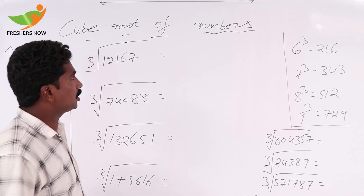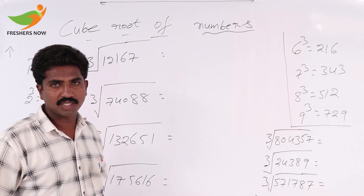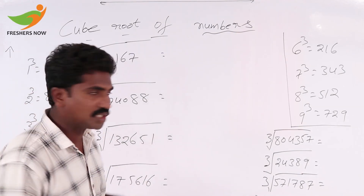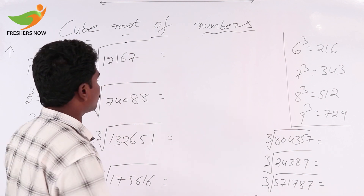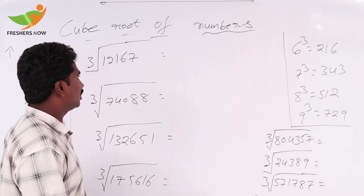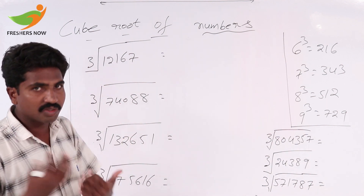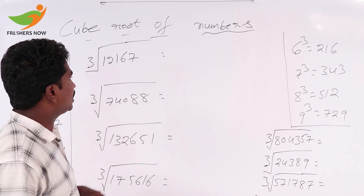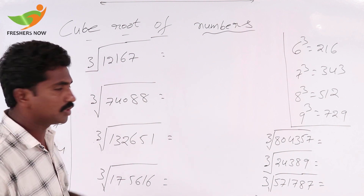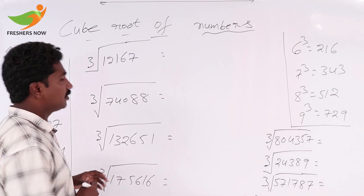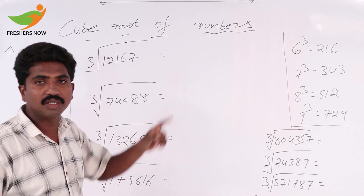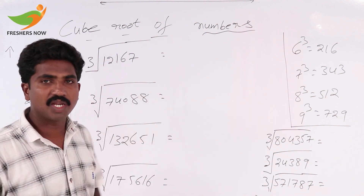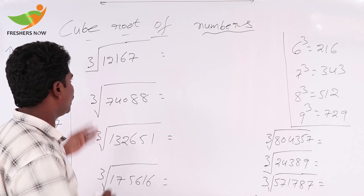Now let's discuss cube root of numbers. It is very easy to find cube root of a number. When compared to square root, it is very easy to find cube root. We can solve it within 4 or 5 minutes.